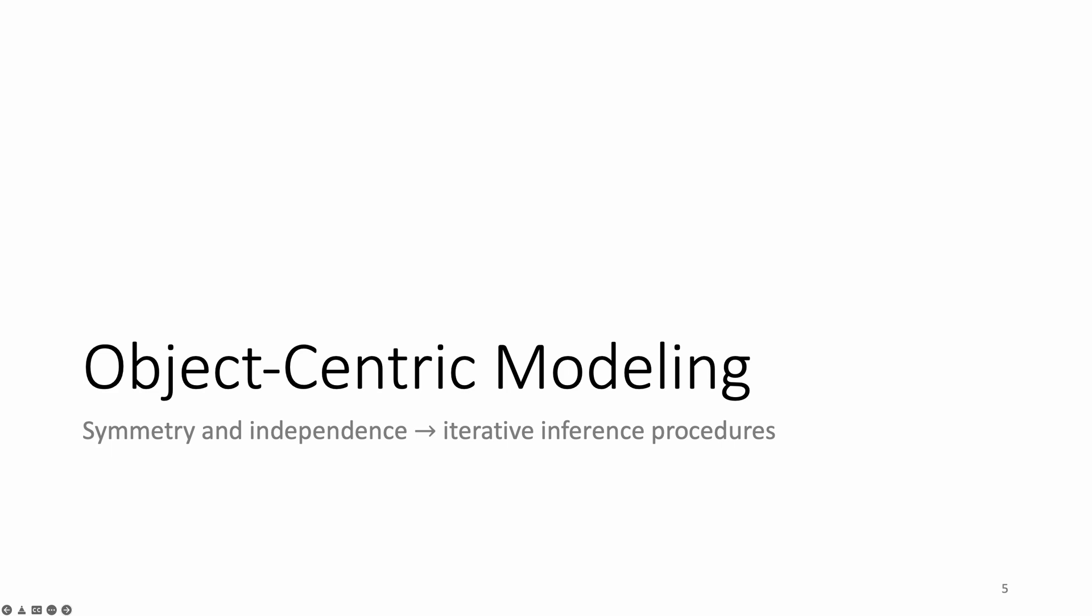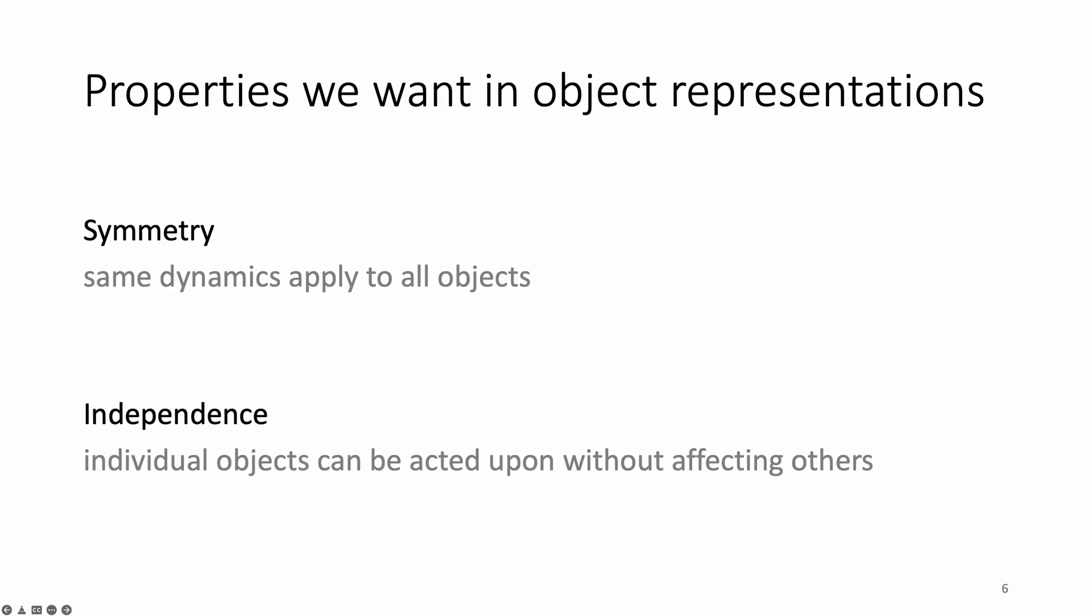I want to start off by posing the question of why it has been difficult to train object-centric models. I'd like to suggest that the reason is that object-centric models are actually meta-learning algorithms, which thus inherit the difficulties of differentiating through optimization procedures. Objects are interesting because they reflect two very general properties about the causal structure of the physical world. The first is symmetry. The same physical laws apply to all objects. The second is independence. Objects can be locally acted upon without affecting other objects. Therefore, these are the properties we want our object representations to satisfy.